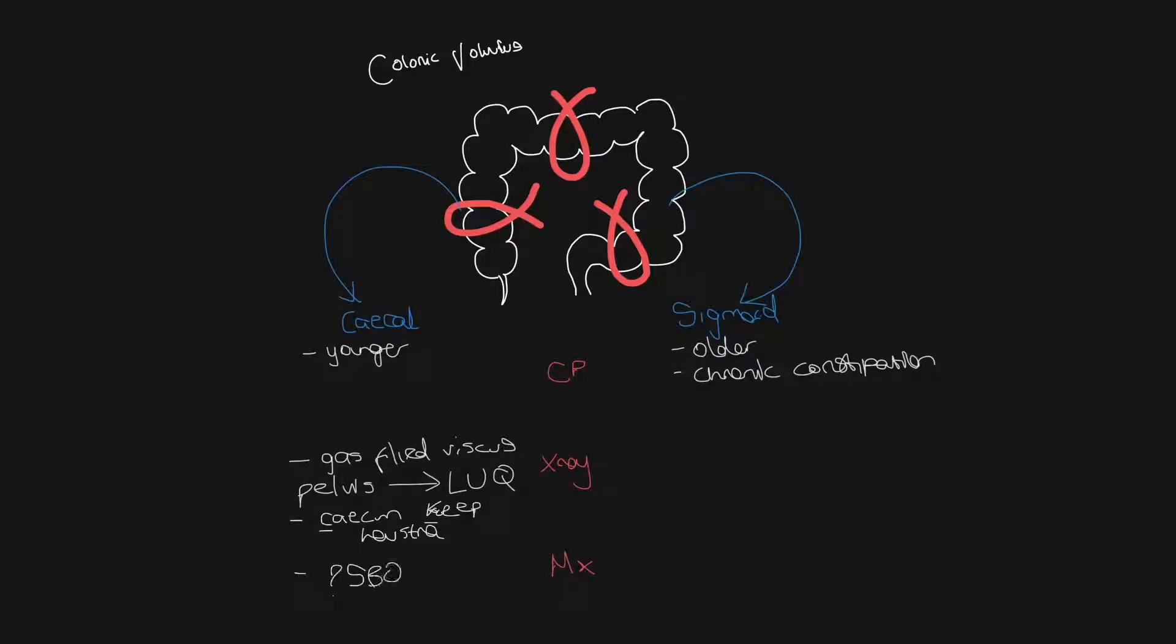But given the location of the cecum, which is distal to the small bowel, you will eventually get small bowel obstruction, and this can be seen as centrally located dilated loops of bowel. They usually have the appearance of stacked coins because of the valvulae conventes, which go around the whole circumference of the small bowel.